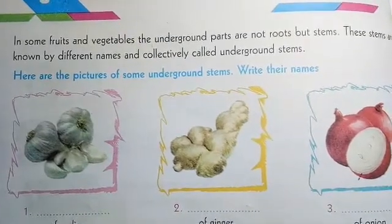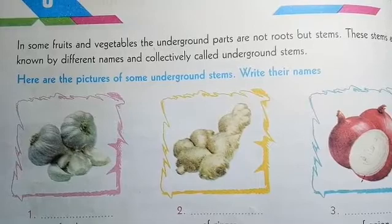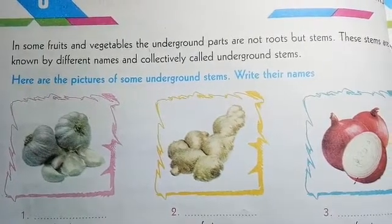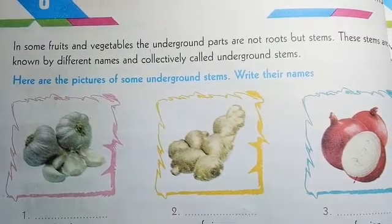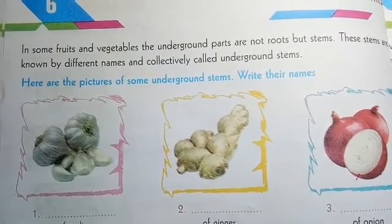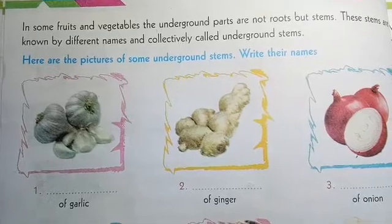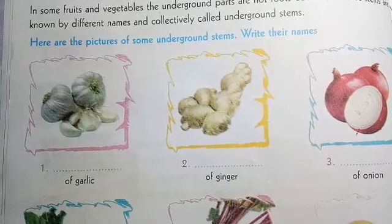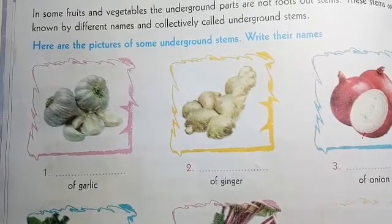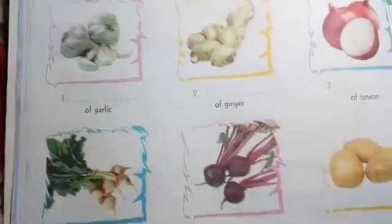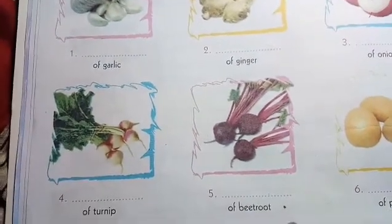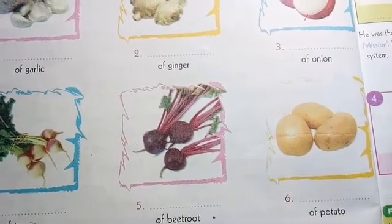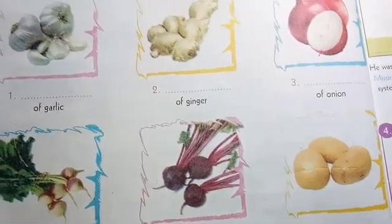These stems are known by different names — lekin unka naming bahut different hai — and collectively called underground stems. For example: onion, garlic, ginger, turnip, beetroot, and potato are all found under the soil. But they are not roots — they are stems.